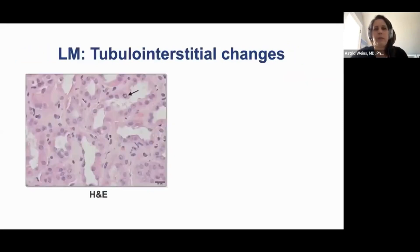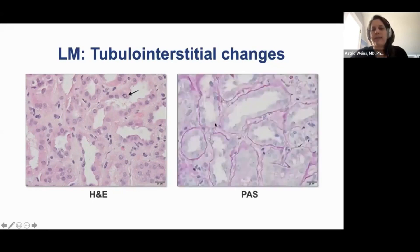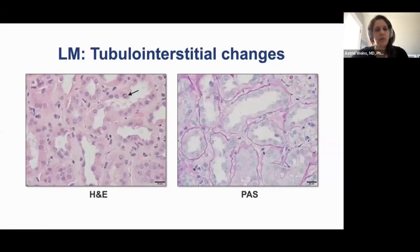When you look at the tubular interstitial changes, these dilated tubules often also have a flattened epithelium with some nuclear dropout and some vacuolization of the cytoplasm. We see occasional mitoses. The PAS stain shows a diffuse loss of the proximal tubular brush border. These are all features of acute tubular injury.